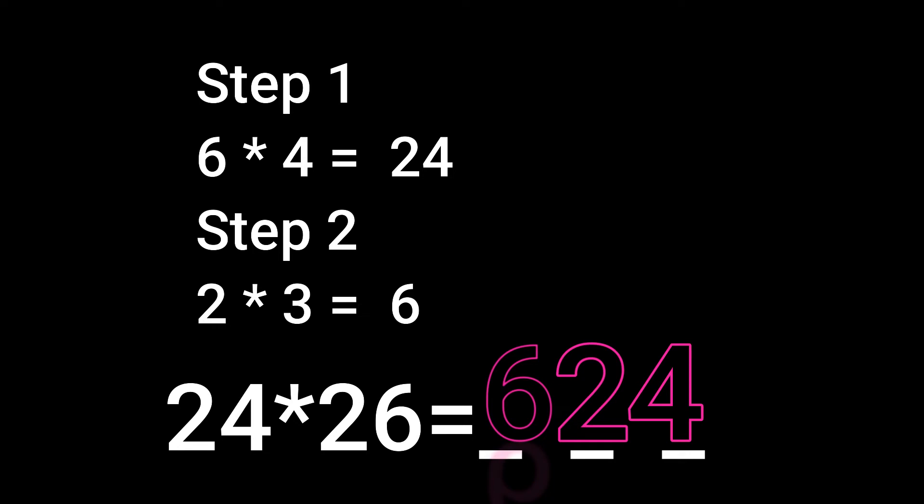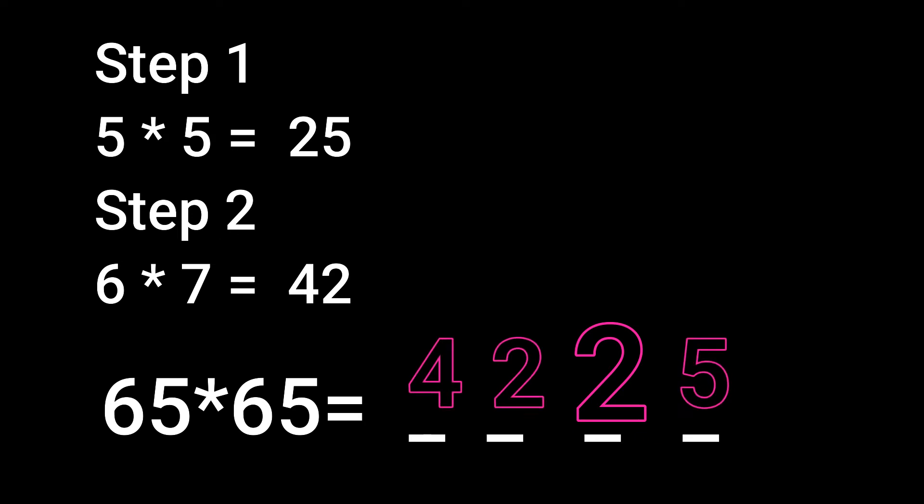Now, let us see another example: 65 into 65. Here, sum of units digit is 5 plus 5 equals 10, and the tens digits are same. So, we can find the answer very easily.